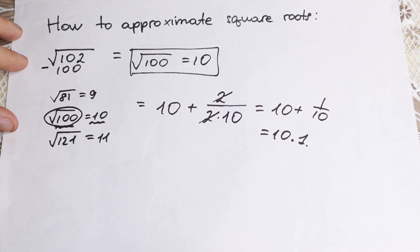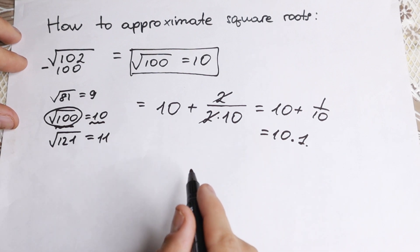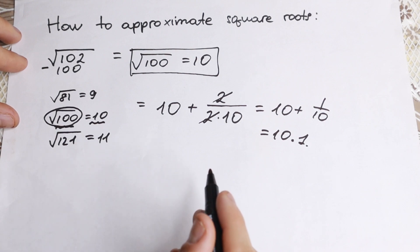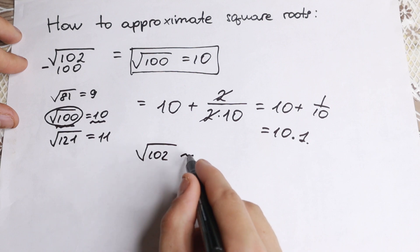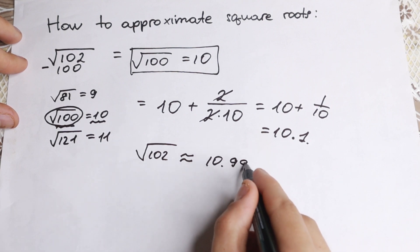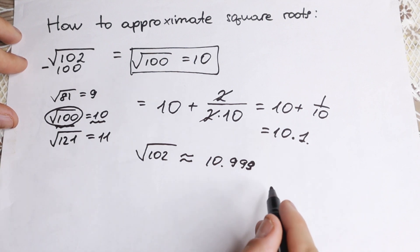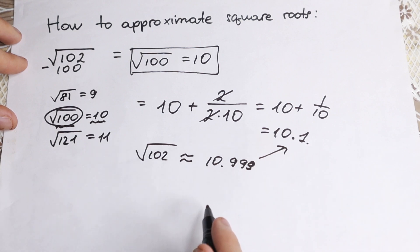And I want to mention that this is approximate. This is approximation. This is not the exact value of square root of 102. Because if we use our calculator we'll find that square root of 102 is approximately equal to 10.9995, something like that. But if you're talking about approximation, as you can see this is the same answer.